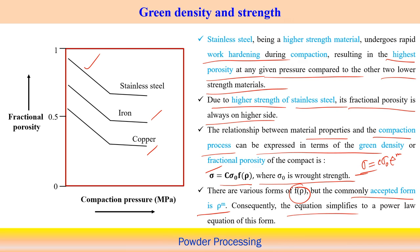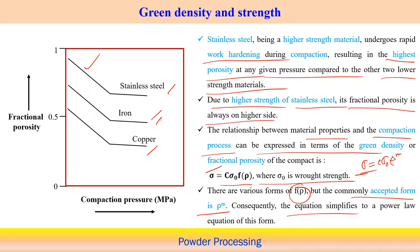We need to find the value of m for this power law, but it more readily simplifies the equation to represent green strength or compaction strength for different materials. For stainless steel, iron, and copper at the same compaction pressure, porosity for stainless steel is much higher compared to iron and copper.